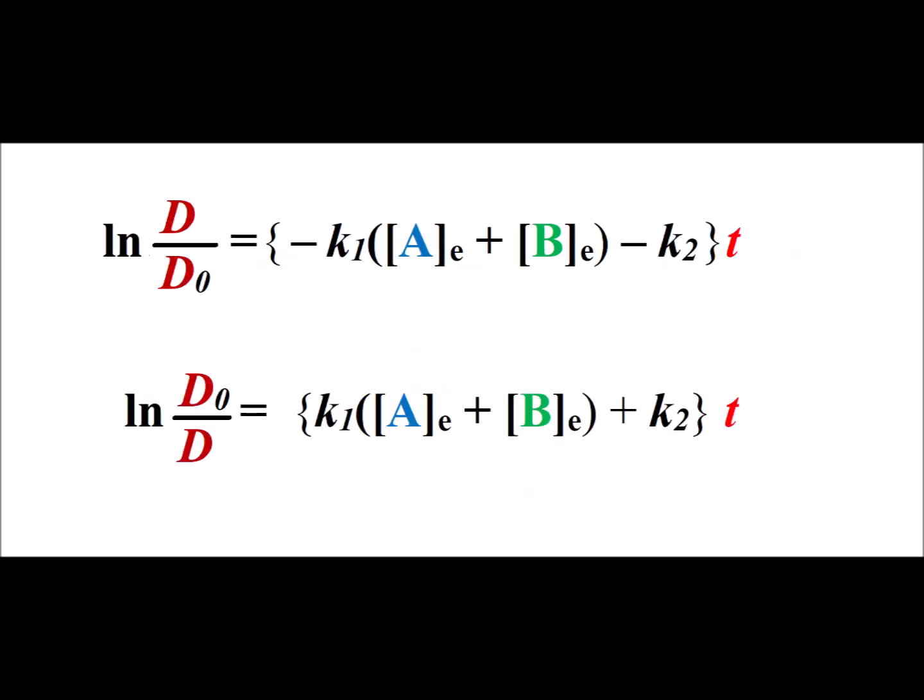When we make those substitutions for a sub e and b sub e, we get the expression for the natural log of D divided by D sub zero, shown as our first equation. Then we use the properties of the logarithm — if we take the reciprocal, we flip the sign on the right-hand side to get the expression shown in the second line.